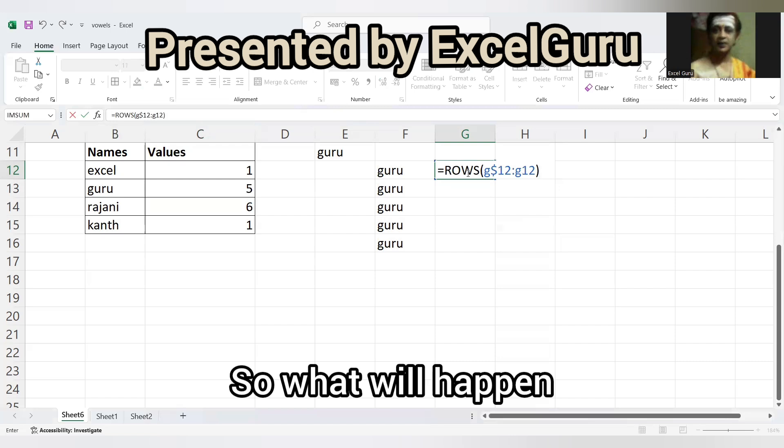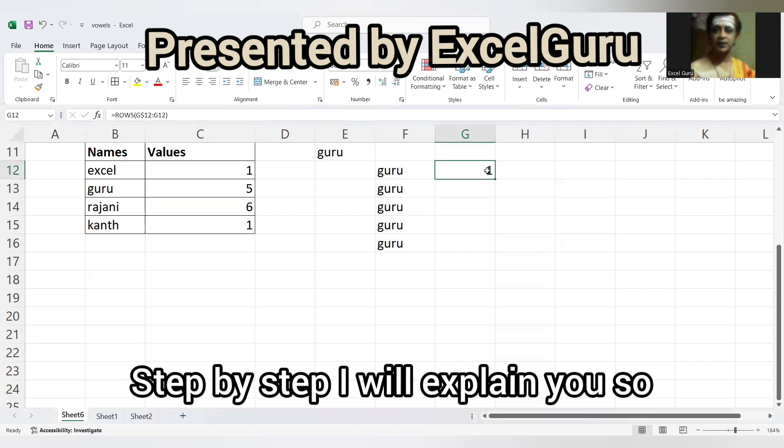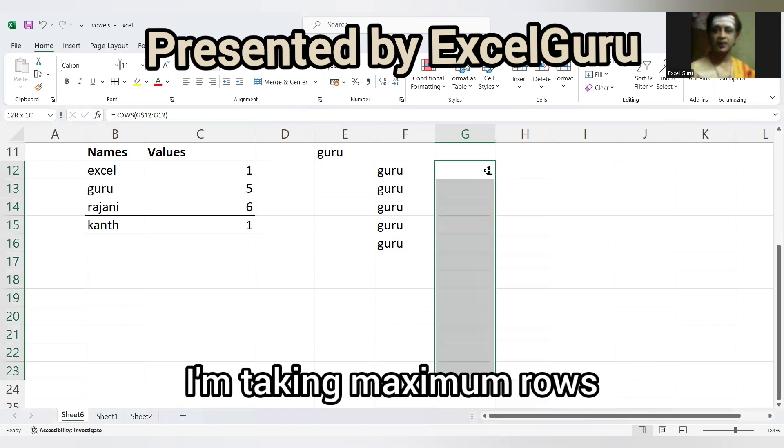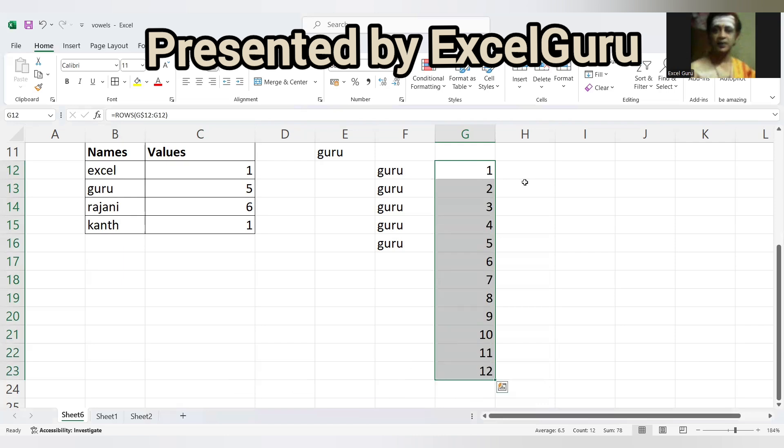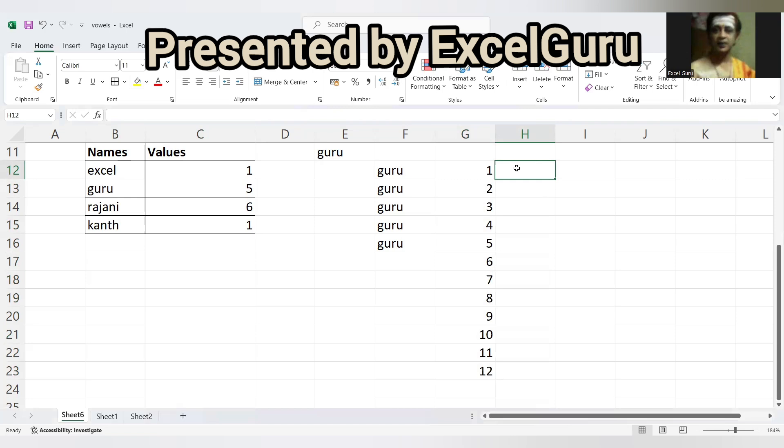So what will happen, step by step I will explain you so that you can understand perfectly. I'm taking maximum rows, control D, so it will show you serial numbers like one, two, three, four, five, as many as you can.